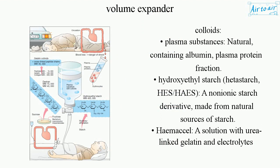Colloids include plasma substances: natural, containing albumin and plasma protein fraction. Hydroxyethyl starch (hetastarch, HES/HAES): a non-ionic starch derivative made from natural sources of starch.